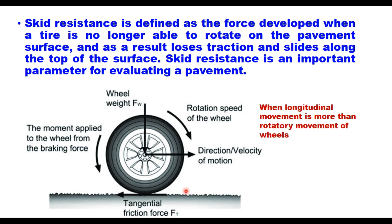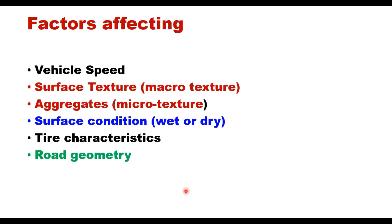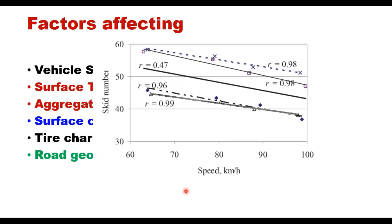Skid resistance depends on several factors. The first is vehicle speed. It is seen that the skid number, or the friction force, reduces with speed — as the speed increases, the friction force reduces.